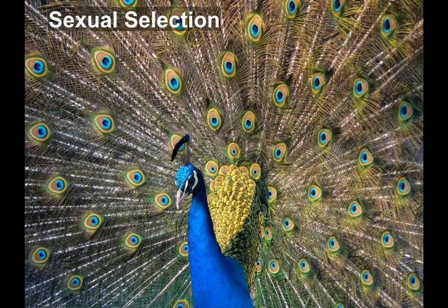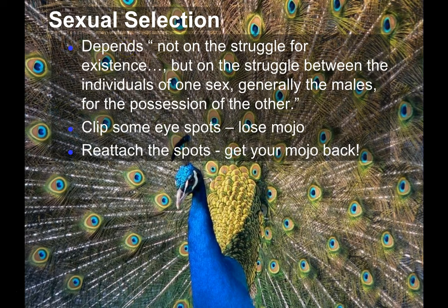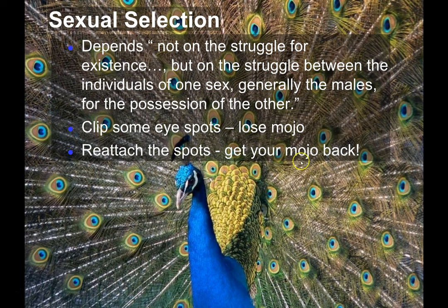So how did evolution drive the production of these feathers? The answer is sexual selection — it's not about survival of the fittest, but about access to the limited reproductive resources of the opposite sex. Darwin wrote in The Origin of Species that sexual selection depends not on the struggle for existence, but on the struggle between individuals of one sex, generally the males, for the possession of the others. In a game preserve, they clipped off many of the eye spots of some peacocks and found that those peacocks lost their mojo — they did not reproduce at as high a rate that season. The next season, they reattached the eye spots and those peacocks were much more likely to find a mate.